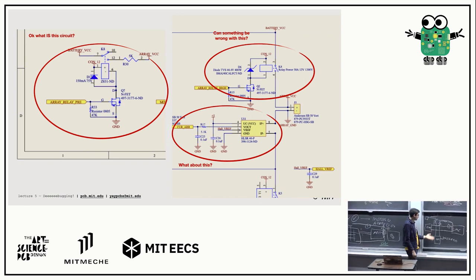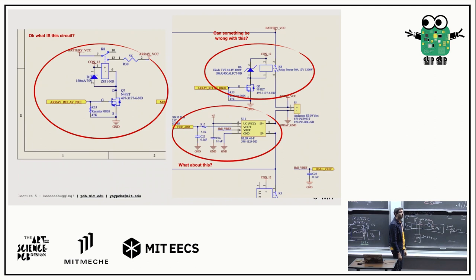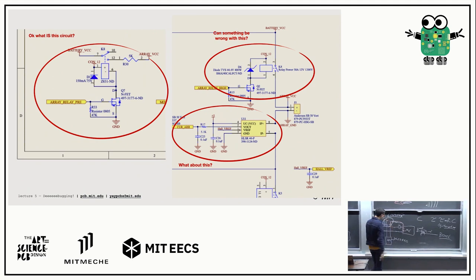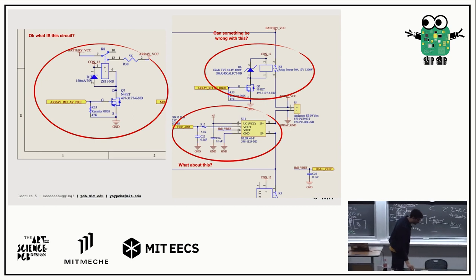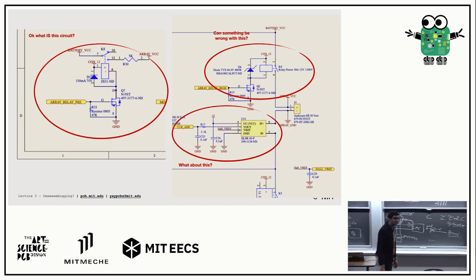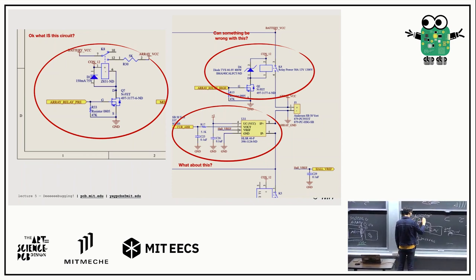Then we ran the continuity test: we put the two multimeter leads across the pre-charge relay test points and turned it on. The multimeter didn't beep at all. So that relay was not turning on — because it had exploded.